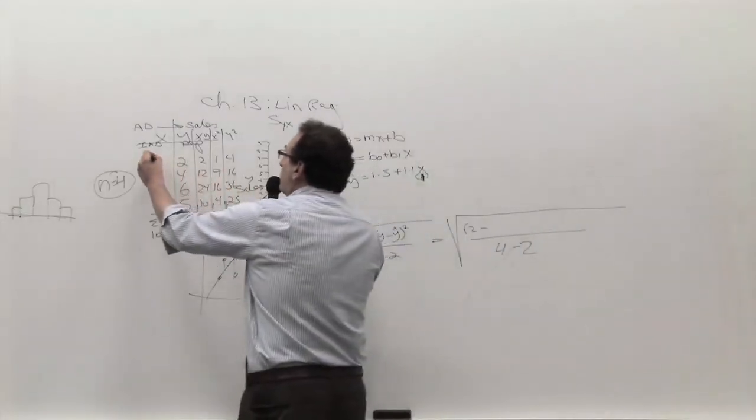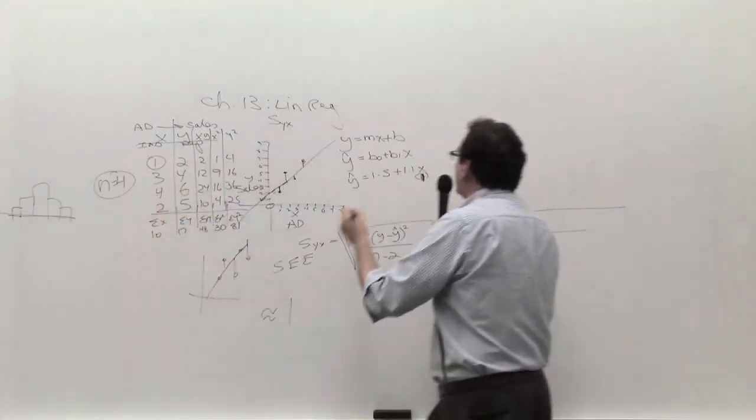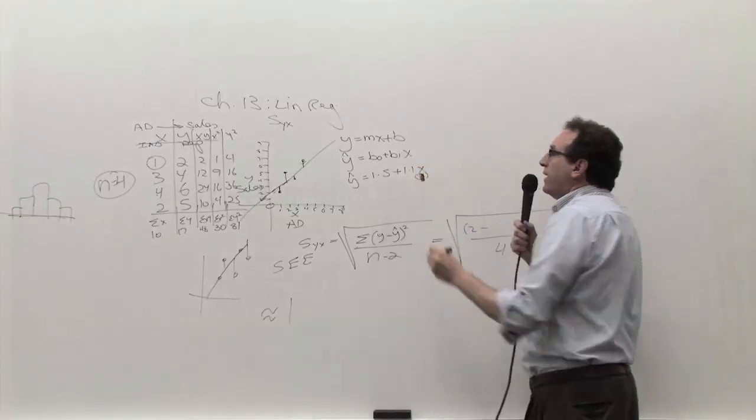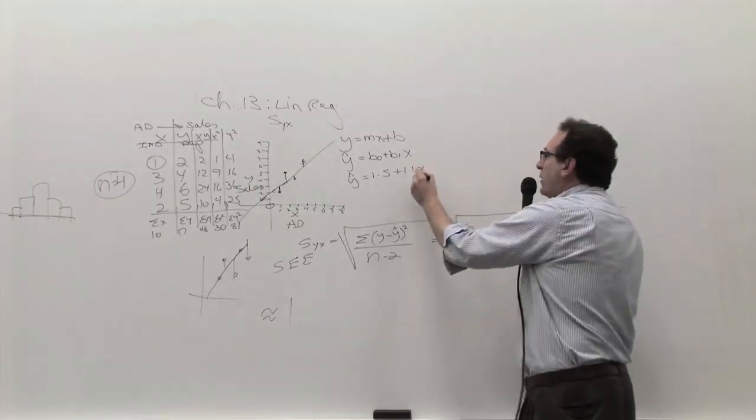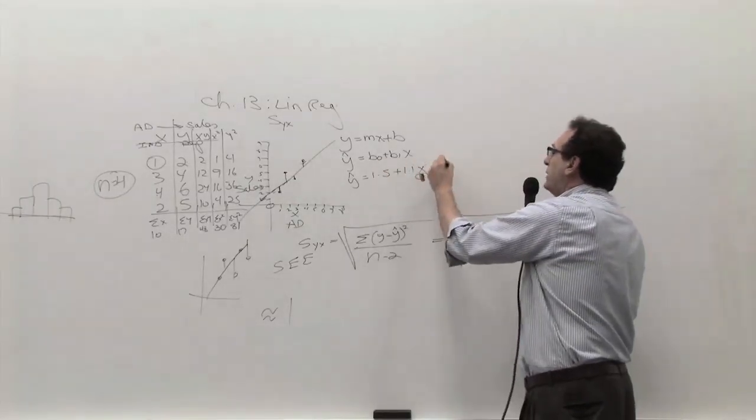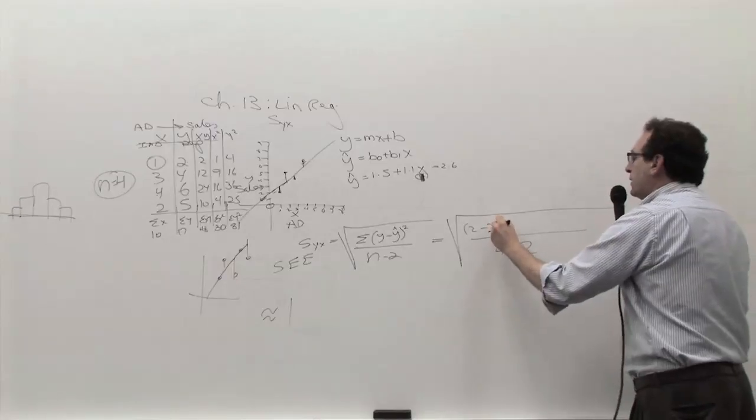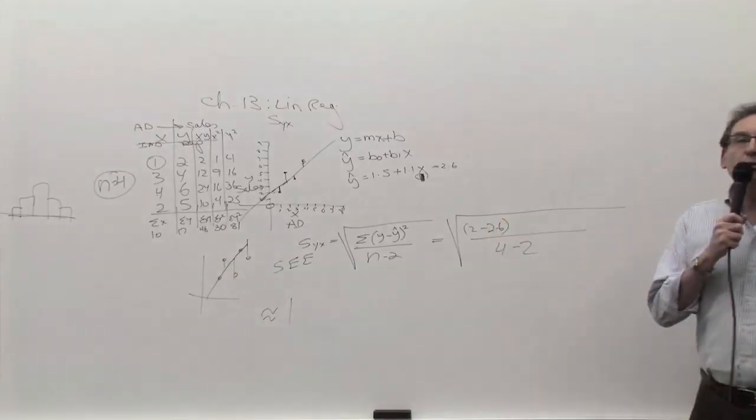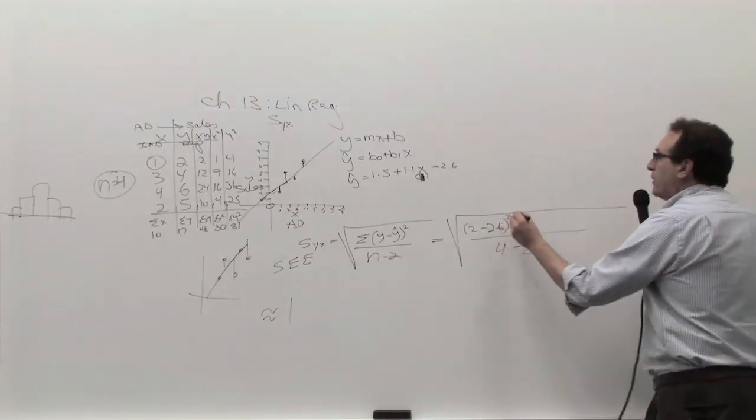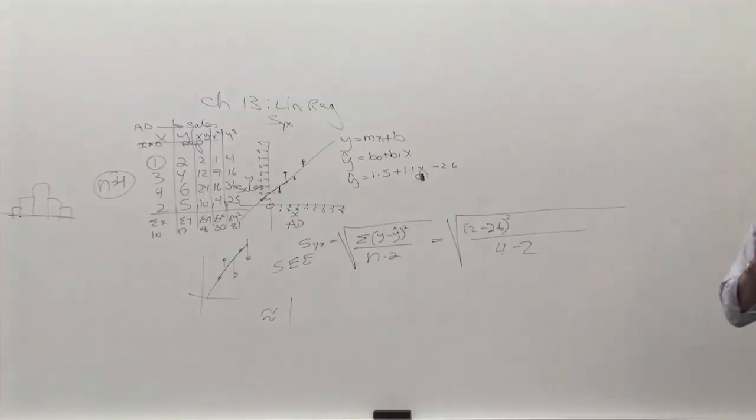So let's do this calculation. This is what I asked you to do for homework. So the bottom part of it is N minus two is four minus two. What about the calculation? Y minus Y hat. Well, what's the first Y? The first Y is two. What's the first Y hat? Well, the first Y hat is the Y that's predicted if X equals one. So if X equals one, what is the Y hat going to be, Kelvin? 1.1 times one plus 1.5 is 2.6. So the first Y hat is 2.6. So when you subtract it, you get minus 0.6. You square it, you get positive 0.36. So this first calculation will contribute 0.36 to the total.